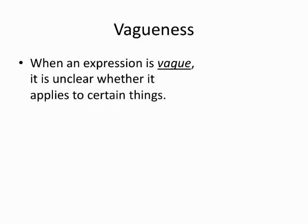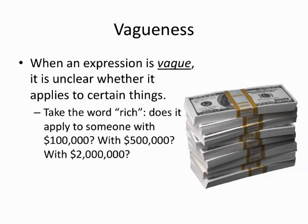Let's start with vagueness. When a word is vague, we don't know the boundaries of its application — we're unsure to which things it properly applies. As an example, take the word 'rich.' Who qualifies as rich? Someone with $100,000? With half a million? Or with two million? The word 'rich' is too vague to decide.